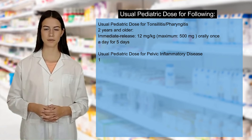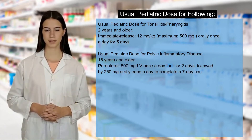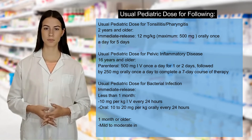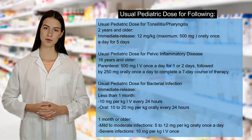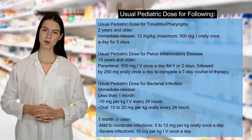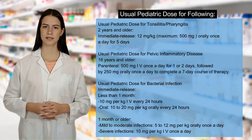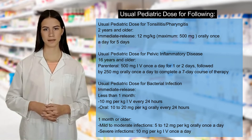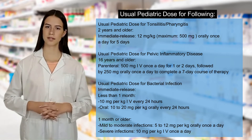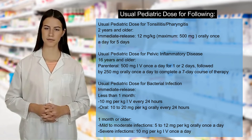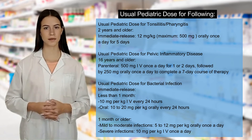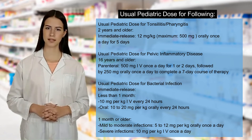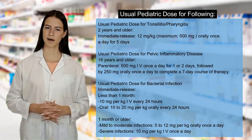Usual pediatric dose for tonsillitis and pharyngitis, 2 years and older: Immediate release, 12 mg/kg (maximum 500 mg) orally once a day for 5 days. Usual pediatric dose for pelvic inflammatory disease, 16 years and older: Parenteral, 500 mg IV once a day for 1 or 2 days, followed by 250 mg orally once a day to complete a 7-day course. Usual pediatric dose for bacterial infection: Immediate release, less than 1 month — 10 mg/kg IV every 24 hours; oral, 10–20 mg/kg orally every 24 hours.